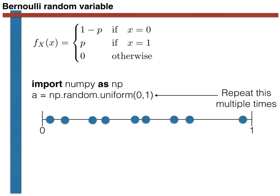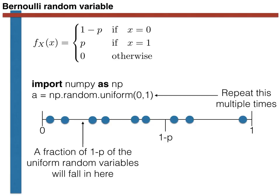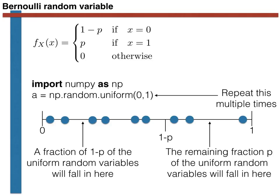Now let's suppose that we divide our interval into a part of length 1 minus p, where p is the parameter of a Bernoulli random variable. If we are generating uniform random variables correctly, the fraction of points that will lie in this first section of the line will be equal to 1 minus p. The fraction of the points that lie in the second portion of the line, meanwhile, will be equal to p.